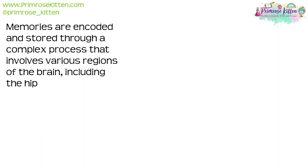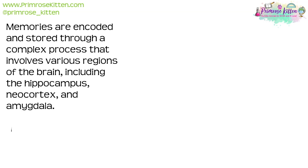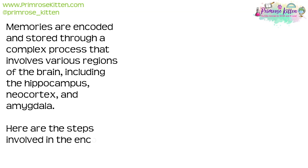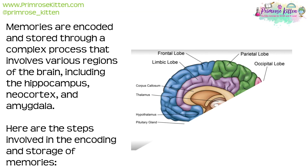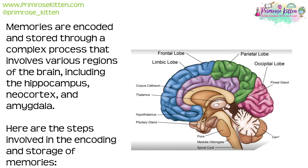Memories are encoded and stored through a complex process that involves various regions of the brain, including the hippocampus, neocortex and amygdala. Here are the three steps involved in the encoding and storage of memories.